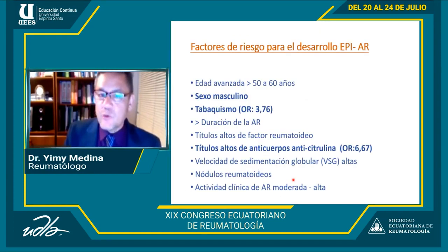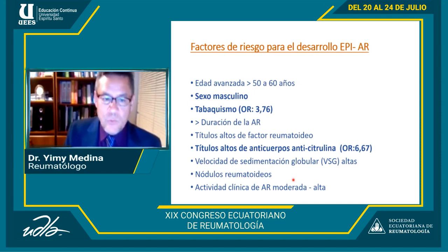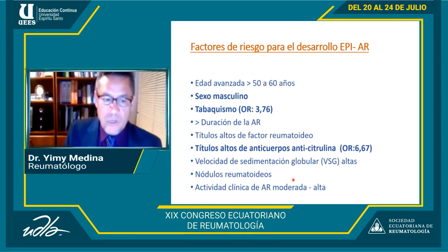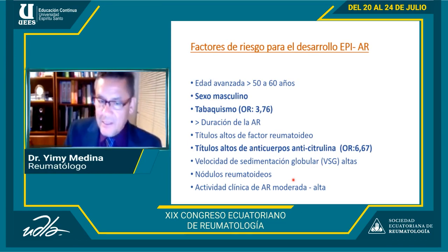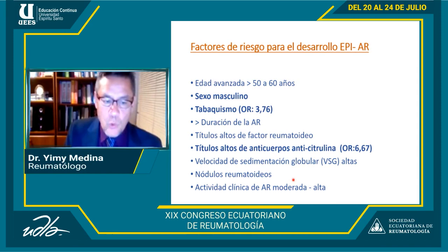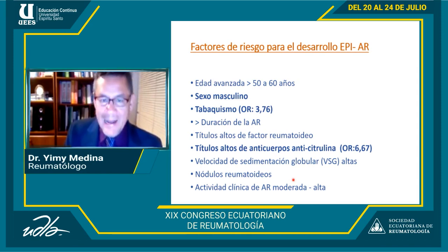Los factores de riesgo para el desarrollo de EPI en AR incluyen: edad avanzada (más de 50 años), sexo masculino, tabaquismo, mayor duración de la AR, títulos altos de factor reumatoideo, títulos altos de anticuerpos anticitrulinados (ACPA), velocidad de sedimentación globular alta, nódulos reumatoideos y actividad clínica moderada a alta.